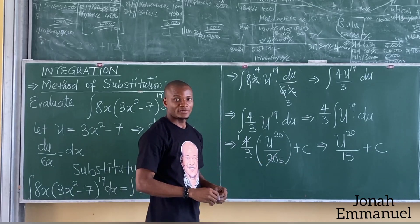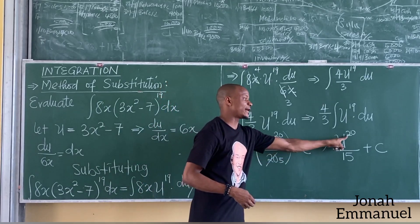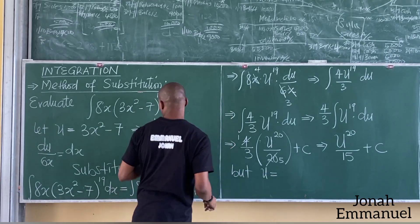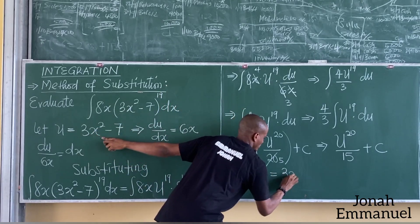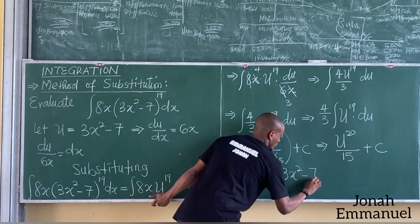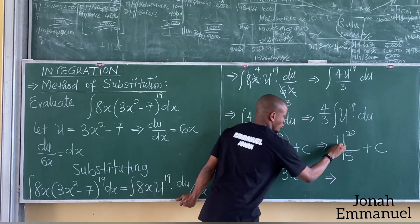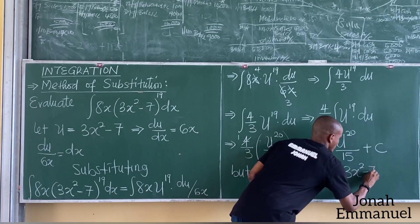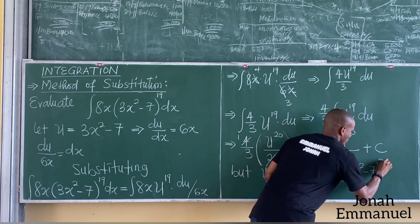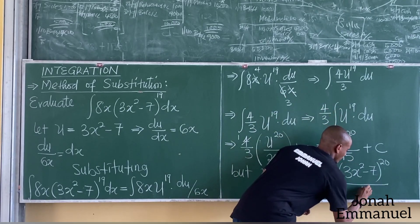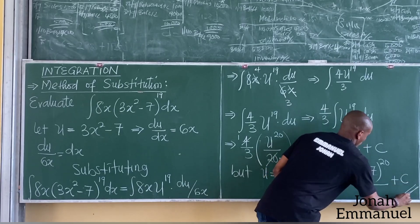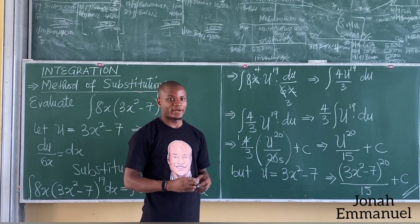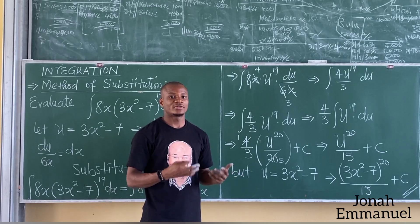Finally, I'll substitute the value of u back into this equation. We said u is equal to 3x squared minus 7. So hence my final answer is: (3x squared minus 7) to the power 20, all over 15, plus c. So this is how we work on problems on integration using the substitution method.